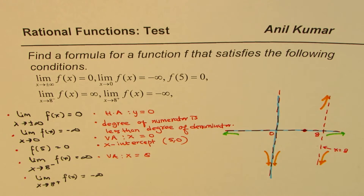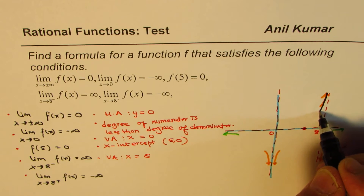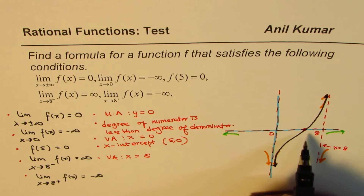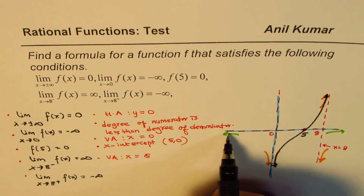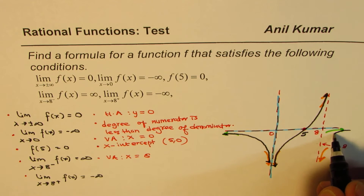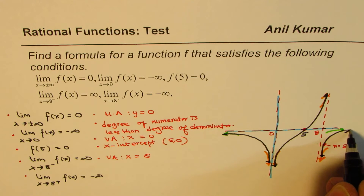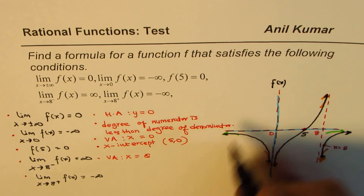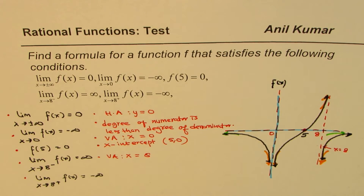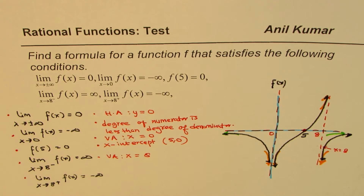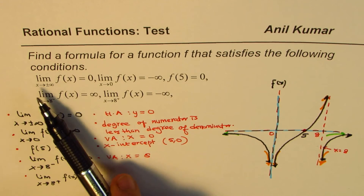Based on the information given, we can sketch the graph. On this side we have the x-intercept at 5, and the curve behaves accordingly around the asymptotes. This was to explain how we gather information from the given data and treat the limits — this is the thinking process and how we represent the information on the graph.